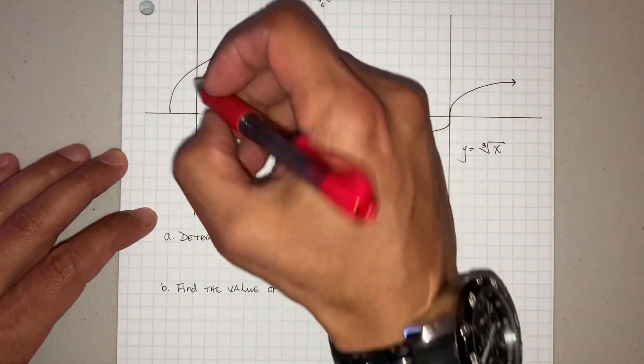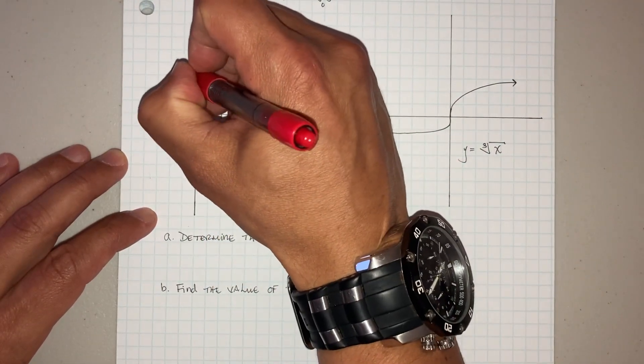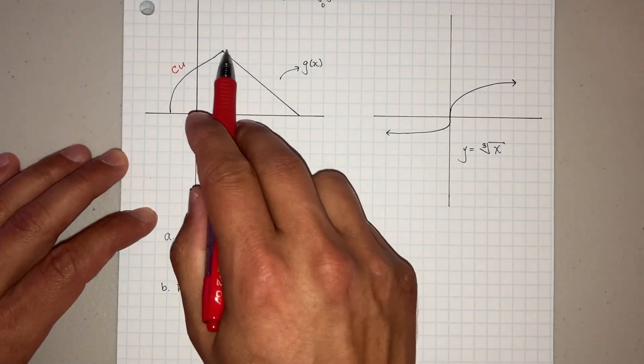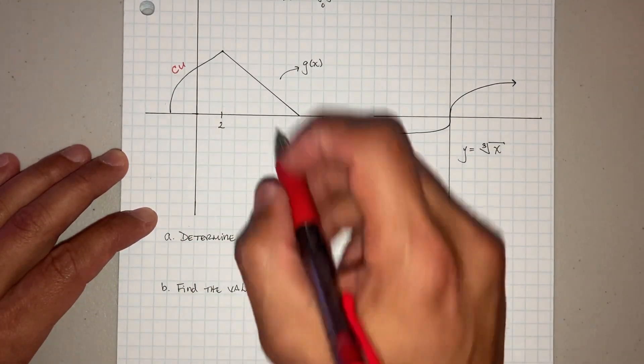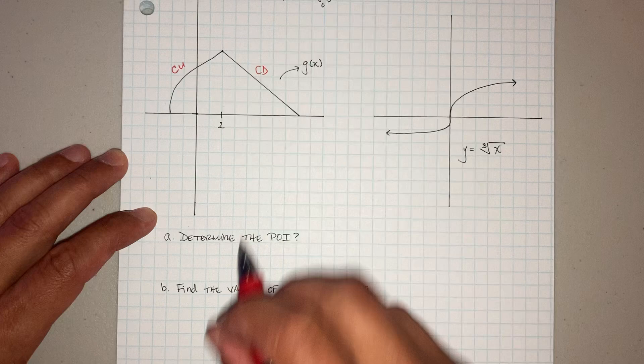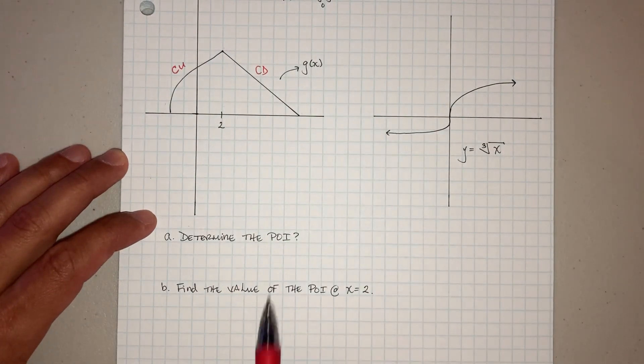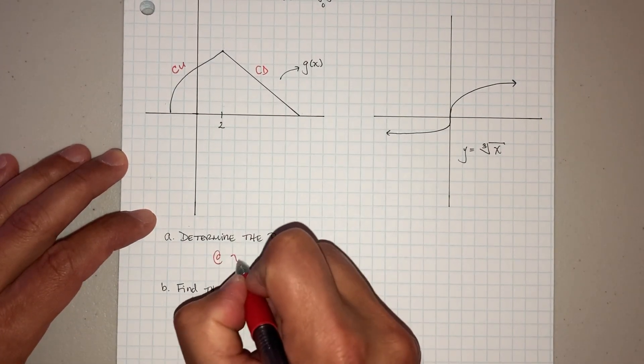So the second derivative is positive, so we're concave up. The second derivative here, because the line is going down, is concave down. So is there a point of inflection? Yes, at x equals 2.